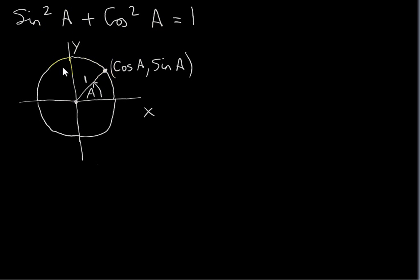By definition, the coordinates of any point on the unit circle are given by cos A, sin A, where A is measured anti-clockwise from the positive X axis. So in this situation, for this point here, A would be an angle between 90 and 180 degrees. That was just a definition. But anyway, let's get back to showing this identity.